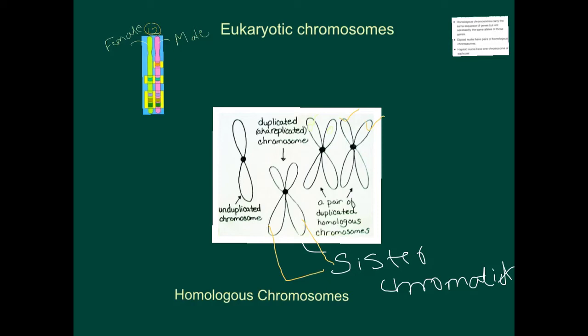So what are homologous chromosomes? In the G1 phase, there was an unduplicated chromosome, and it did have a homologous chromosome. What happened in the S phase? Just like the original chromosome got duplicated, the homologous chromosome of the original also got duplicated.